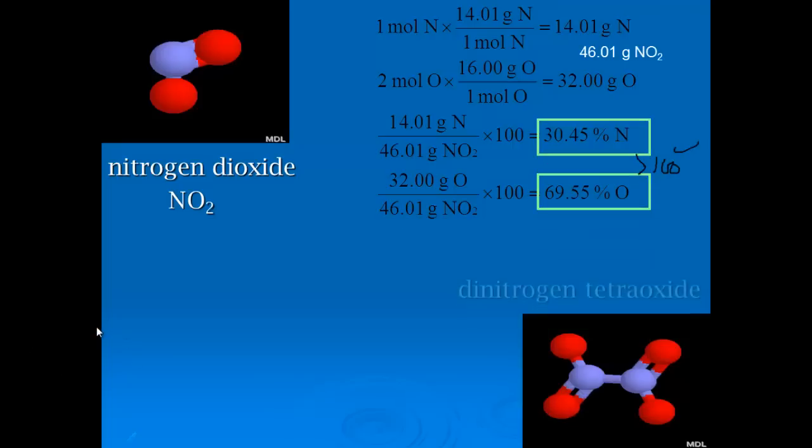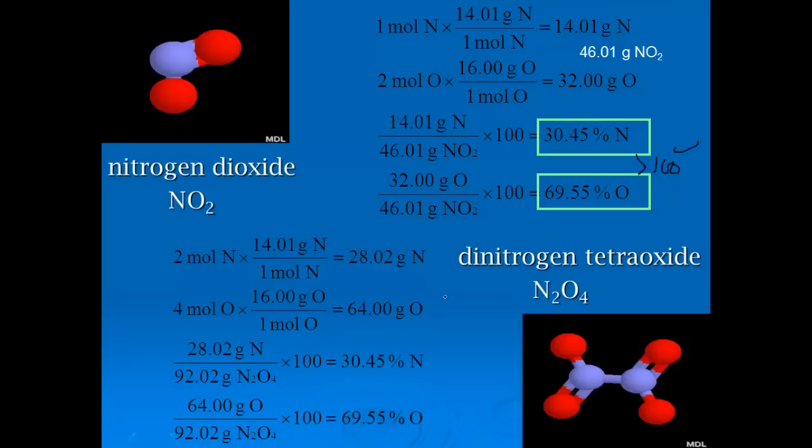Now, if I look at dinitrogen tetroxide, the N2O4, it comes out to be exactly the same. You've got 30.45% nitrogen and 69.55% oxygen.